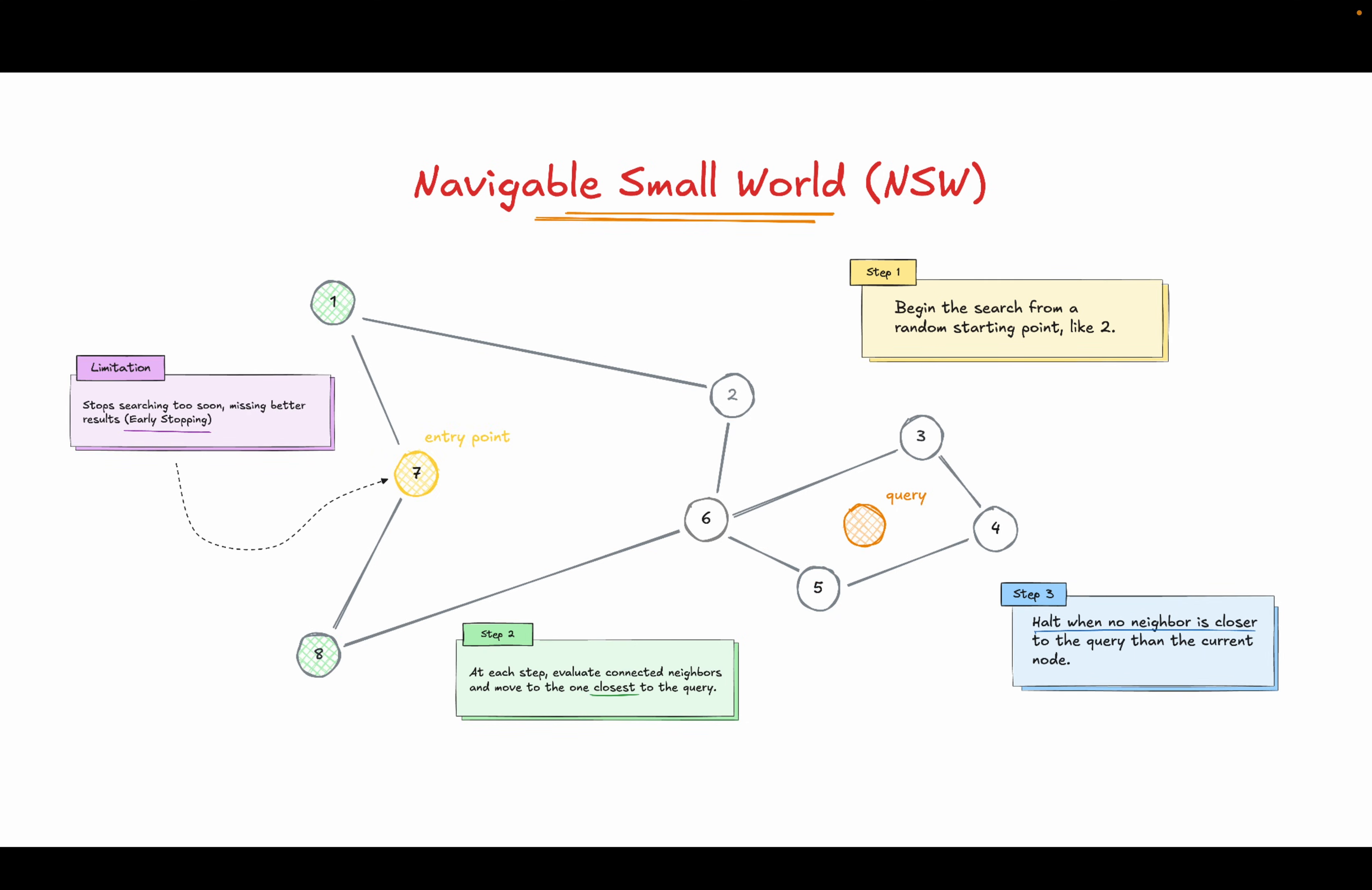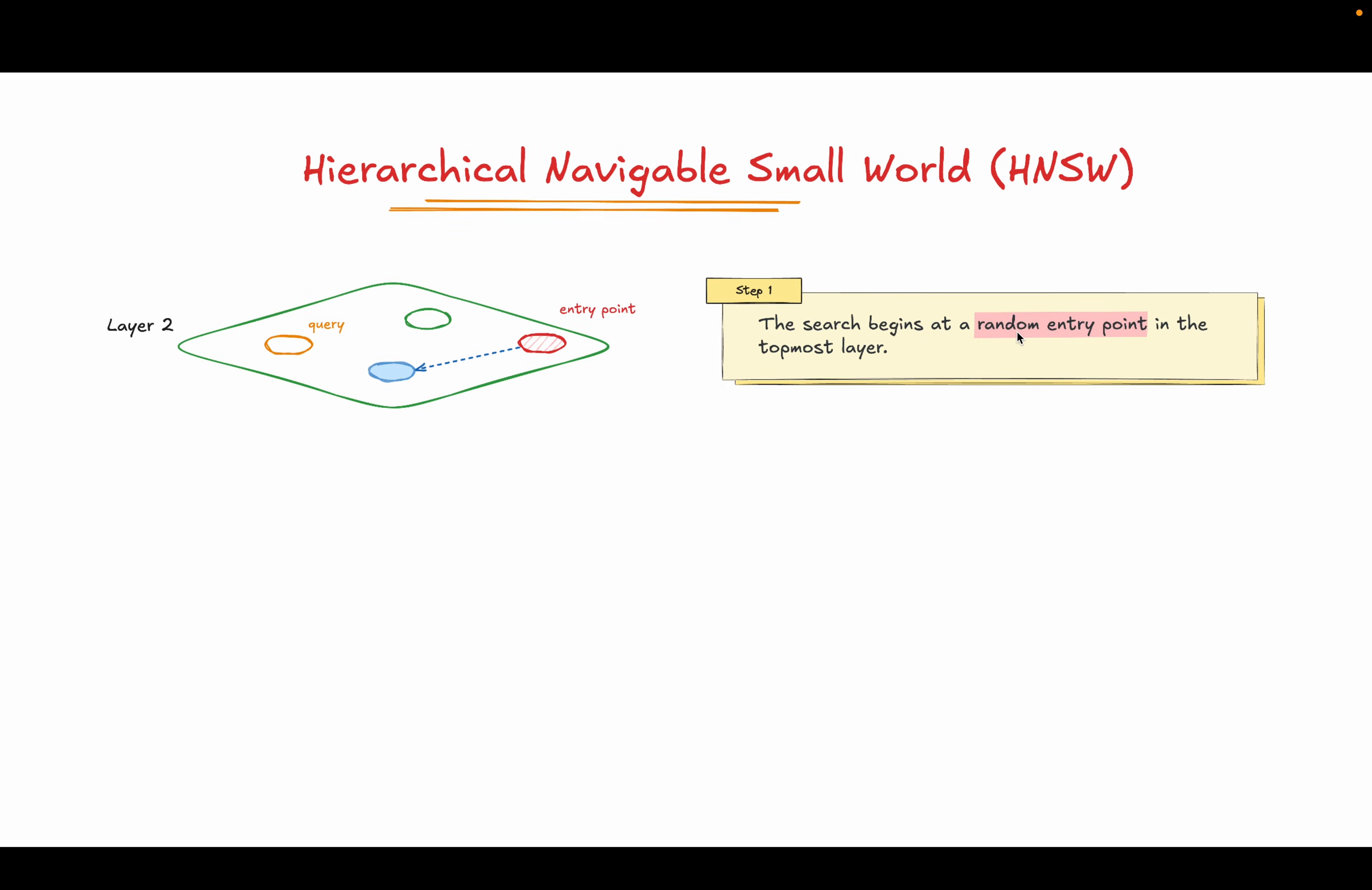Now there is one limitation to this. As you can see from the graph, if we start our entry point from say seven, and now you compare the neighbors and the current node to the query point, you can see that seven is closer to the query point than its neighbors one and eight. This is called early stopping. Even though we have better candidates, better nodes which are closer to the query, we stop over here.